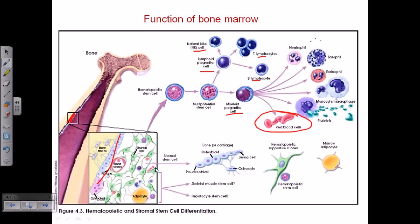The bone marrow also has pre-osteoblast cells, which mature into osteoblast cells that produce and harden bone. There are also other smaller cells that can produce skeletal muscle cells and hematopoietic stem cells. These are the different types of cells produced from the bone marrow. The bone marrow is a major player because it gives rise to a variety of different cell types from both myeloid and lymphoid progenitors.